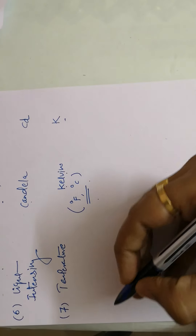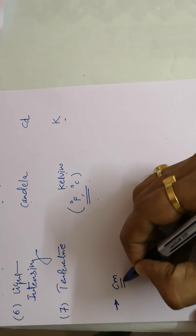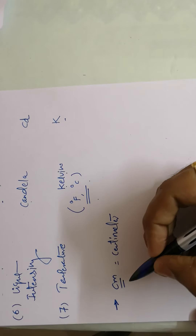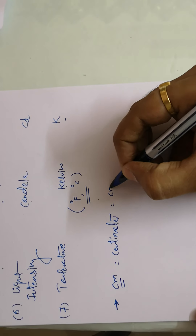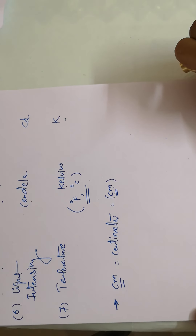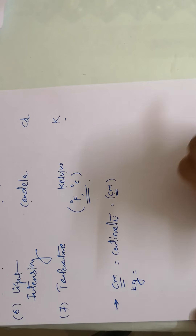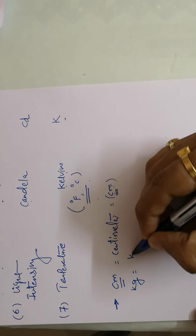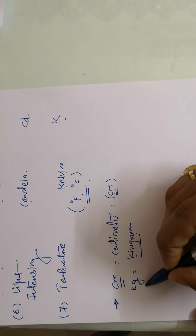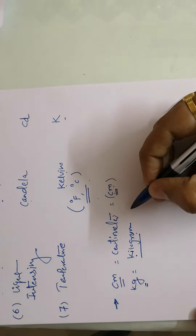Temperature is represented by the symbol 'K'. Now, regarding how to write units: for example, centimeter is written as 'cm'. The important rule is that units must always be written in small (lowercase) alphabets — only then are they widely and universally accepted. For example, rather than writing kilogram in full, you just use the abbreviated form 'kg'.